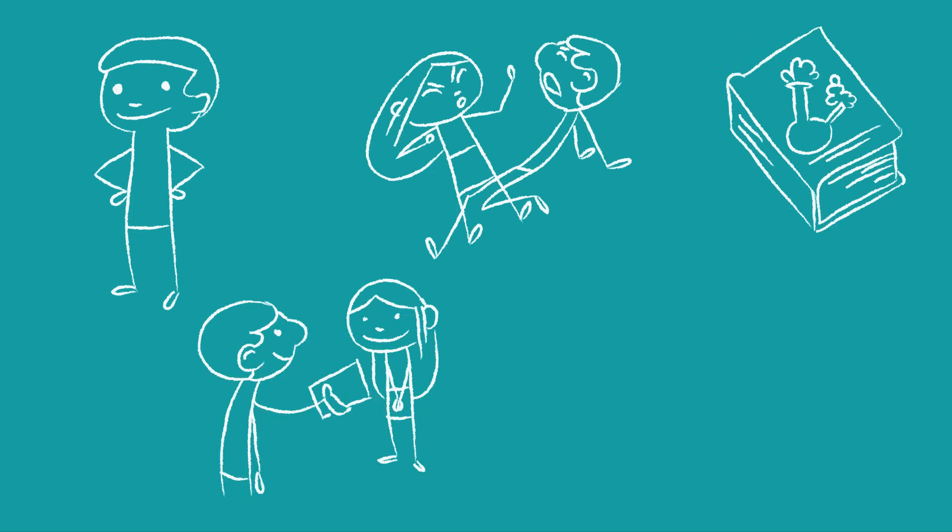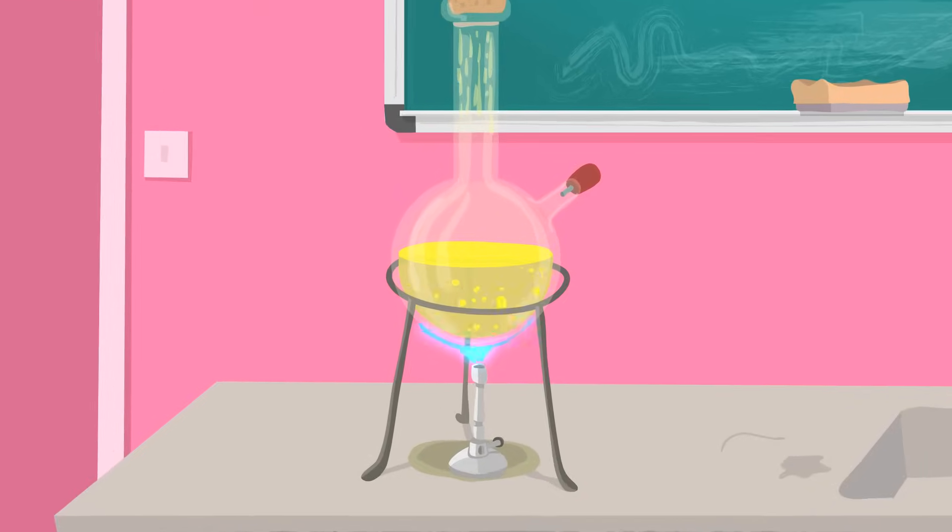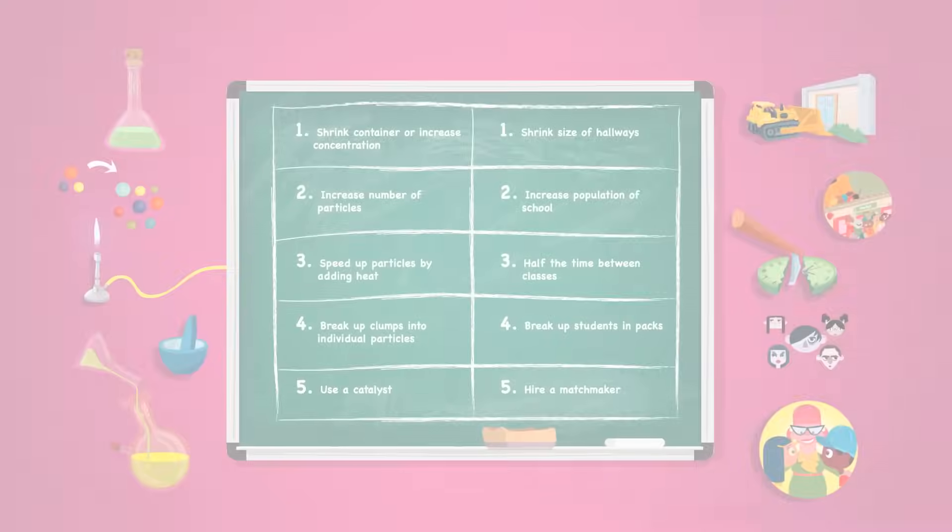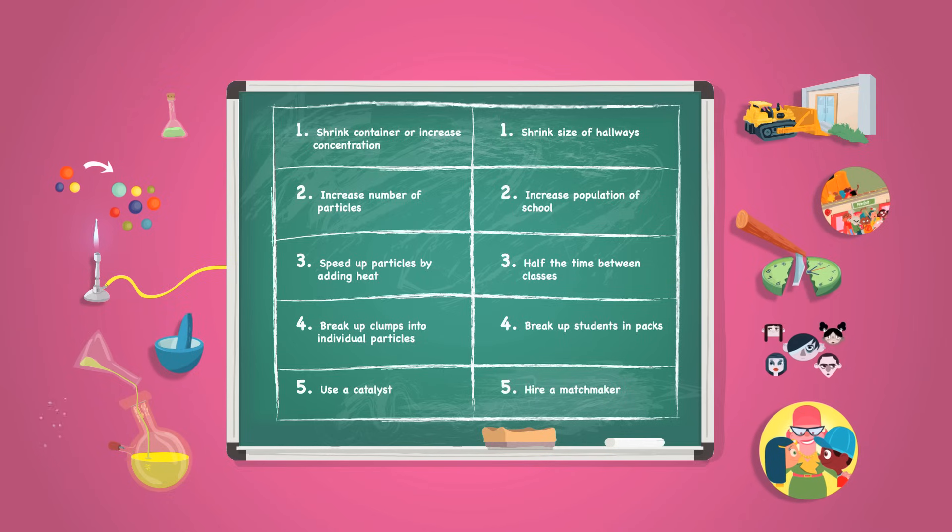So to sum up, if a future chemist wants a date for the dance, he must collide with another person and knock the books out of their hands. And if a chemist wants to make a chemical reaction occur, the particles must collide in the correct orientation with an appropriate amount of energy. And both of these processes can be accelerated using the five methods I've described.